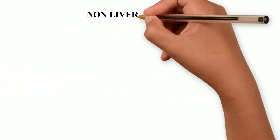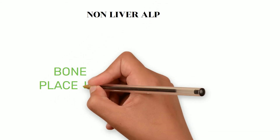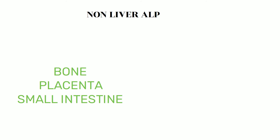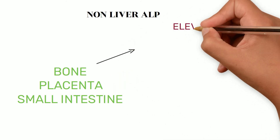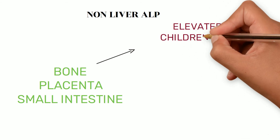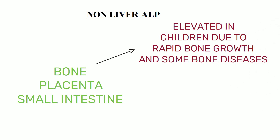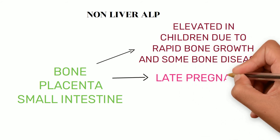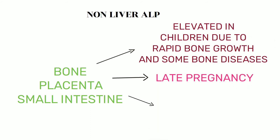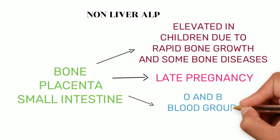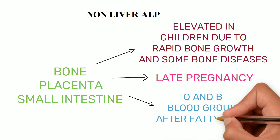ALP is not only found in the liver — there are non-liver sources as well. It is also found in bone, placenta, and small intestine. Due to the bone isoenzyme, it is elevated in children due to rapid bone growth and in some bone diseases with rapid bone turnover. Due to the placental isoenzyme, it is elevated in late pregnancy and in individuals with blood group B following a fatty meal.